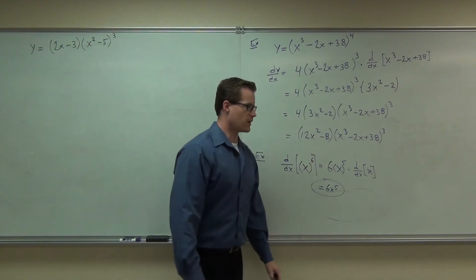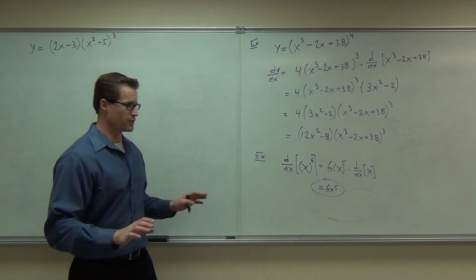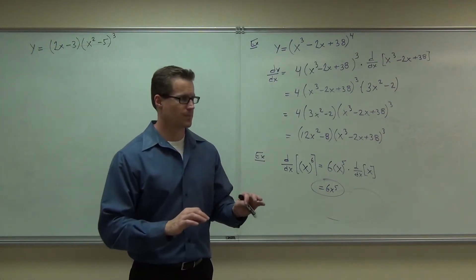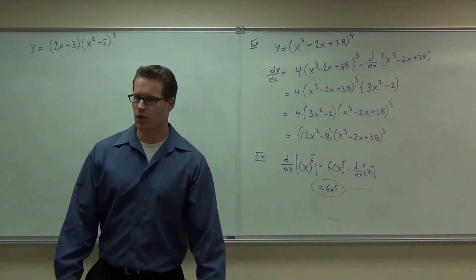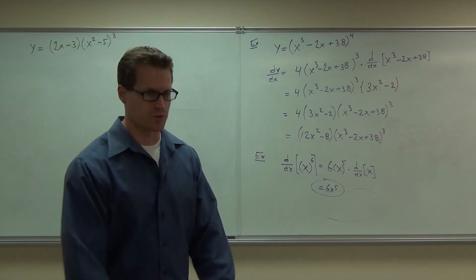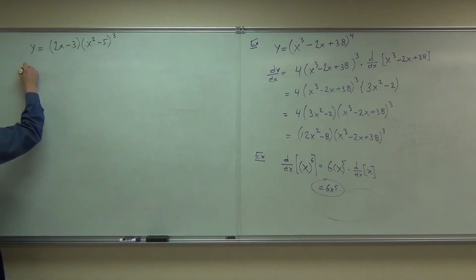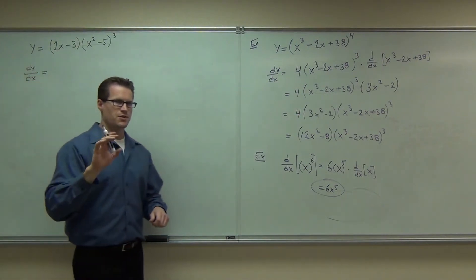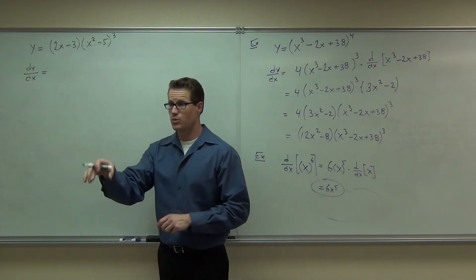Just do the product rule right now, and we'll talk about the next part later. Don't take the derivatives yet, just set up the product rule. The product rule should say the derivative of the first times the second plus the first times the derivative of the second. Were you all able to do that?